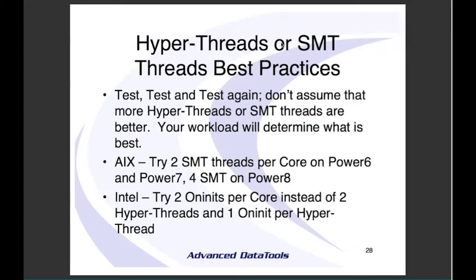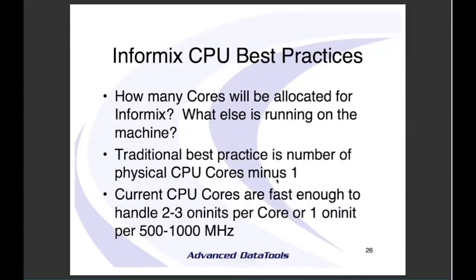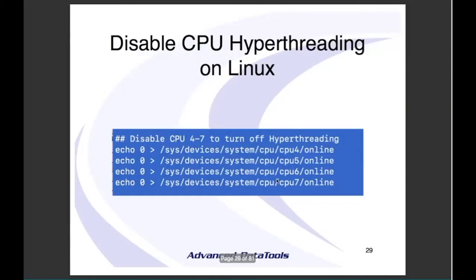On AIX, the recommendation is on Power 6 to run two SMT threads; on Power 8, run four SMT threads. The best way to change hyperthreading is at the BIOS level, not in the operating system. On Linux, I can turn off hyperthreading by disabling the second CPU thread, but you really want to do this at the BIOS level.